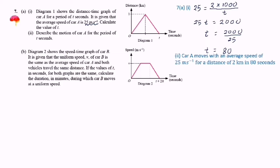Part B. Diagram 2 shows the speed-time graph of car B. It is given that the uniform speed V of car B is the same as the average speed of car A, and both vehicles travel the same distance. If the value of T in seconds for both graphs is the same, calculate the duration in minutes during which car B moves at a uniform speed.